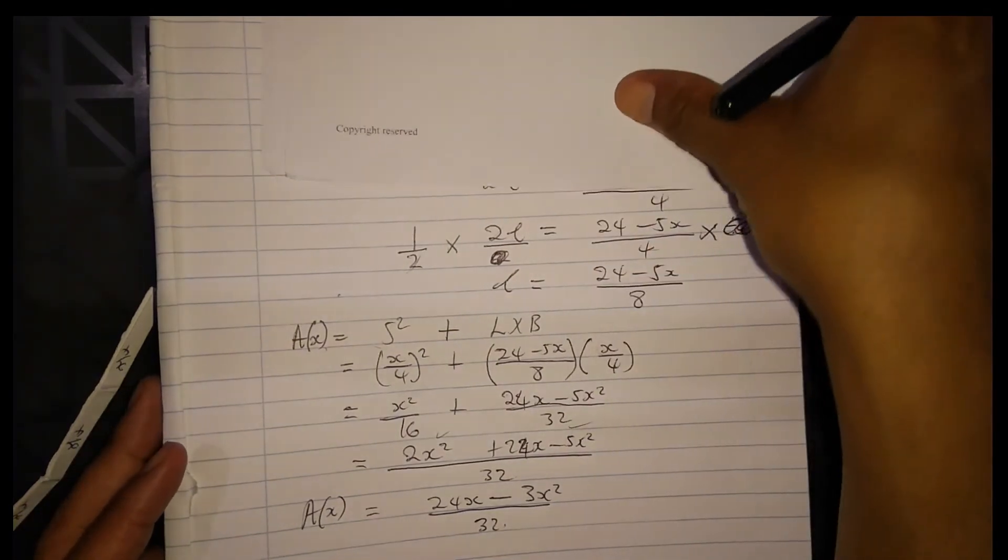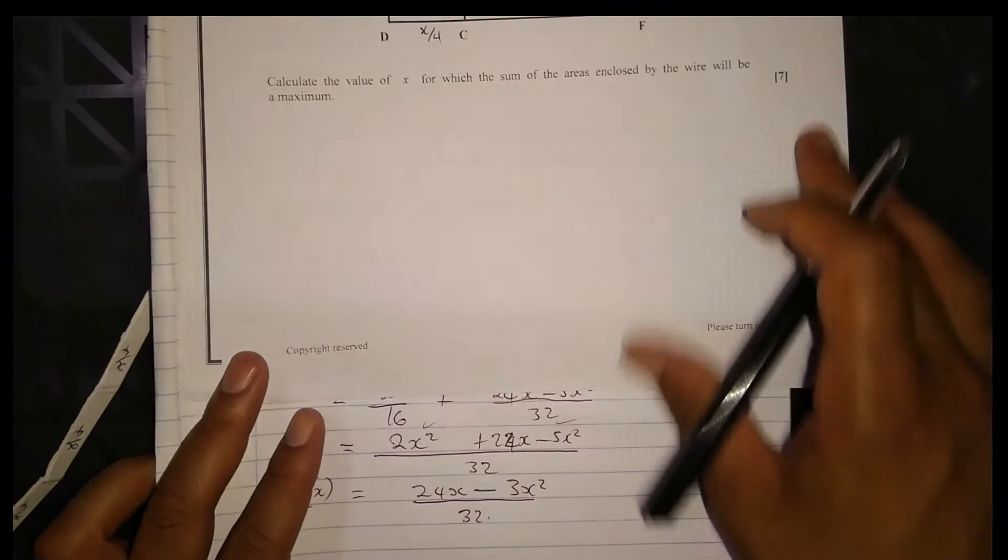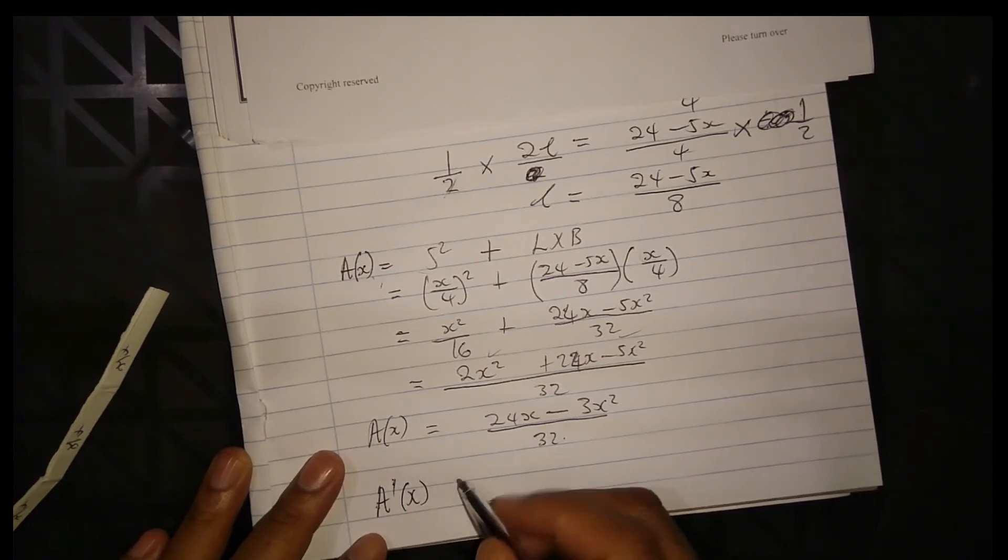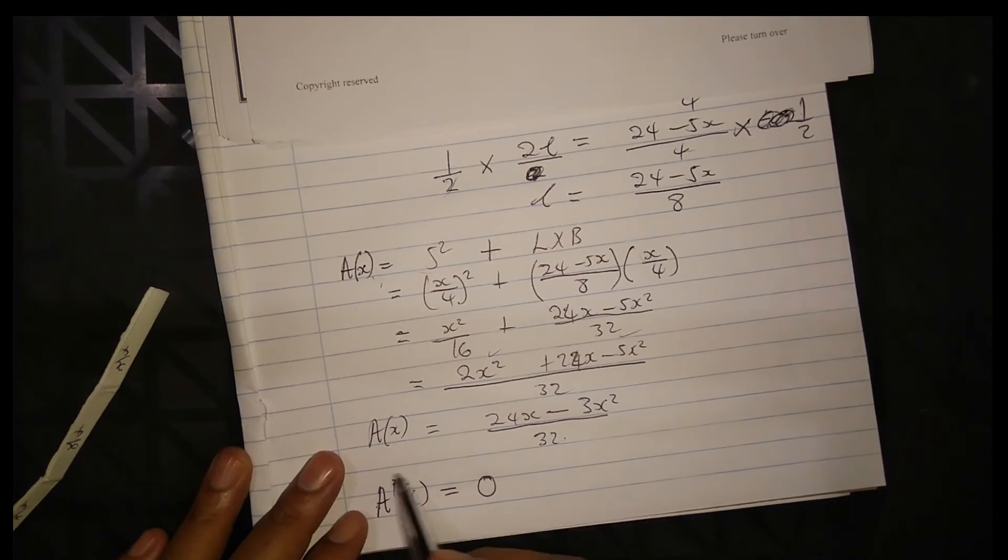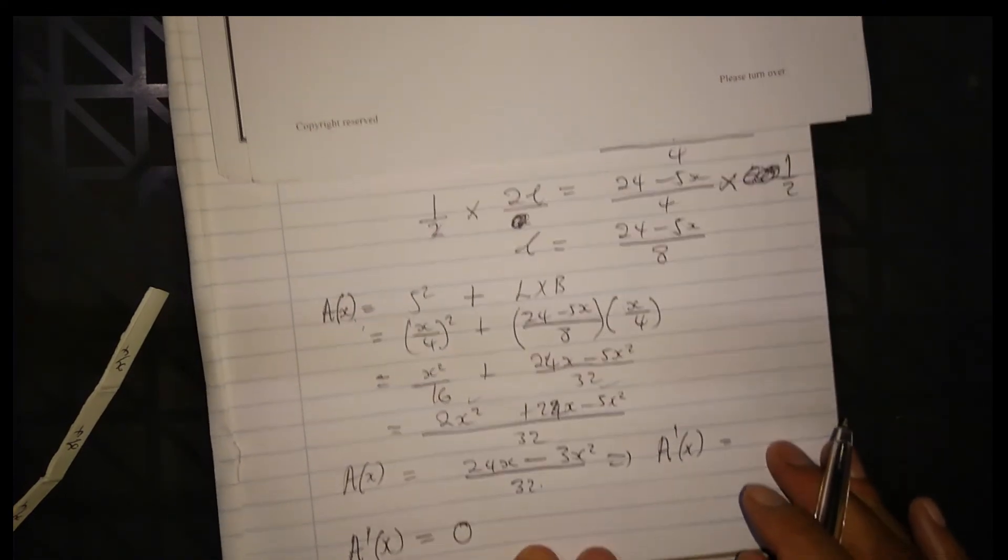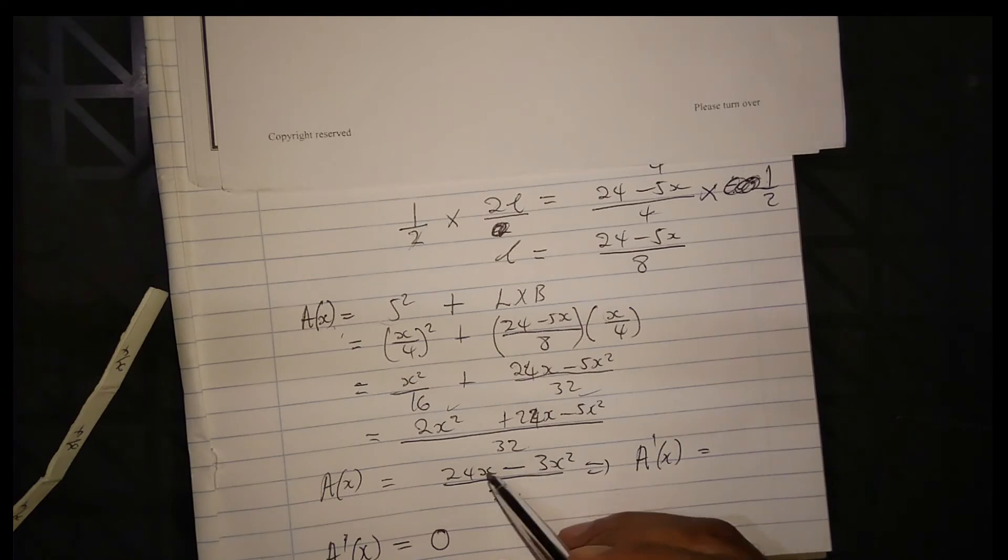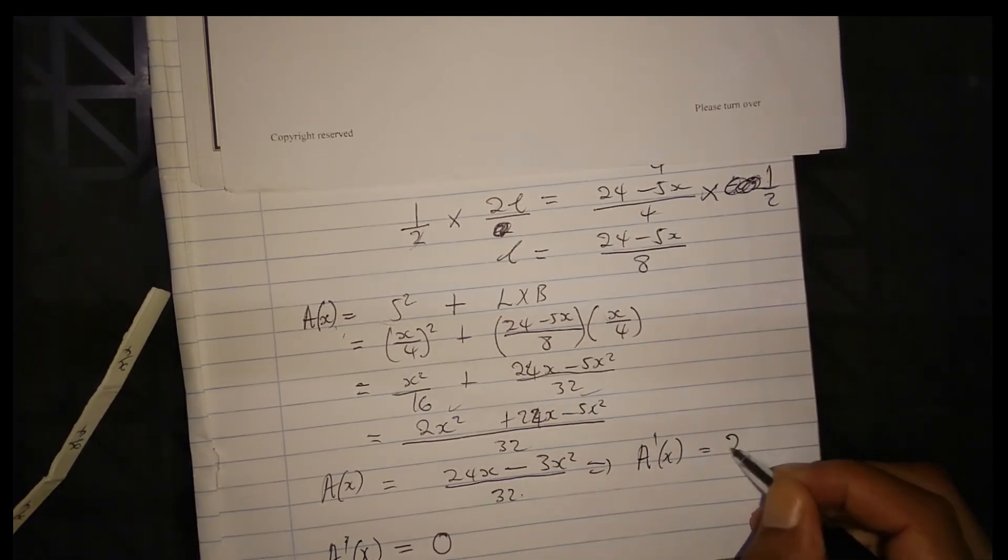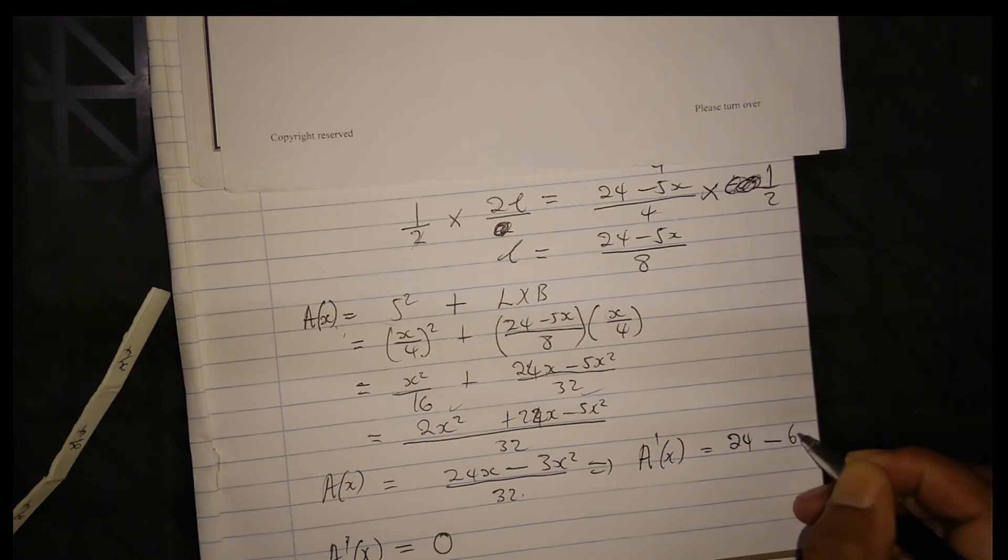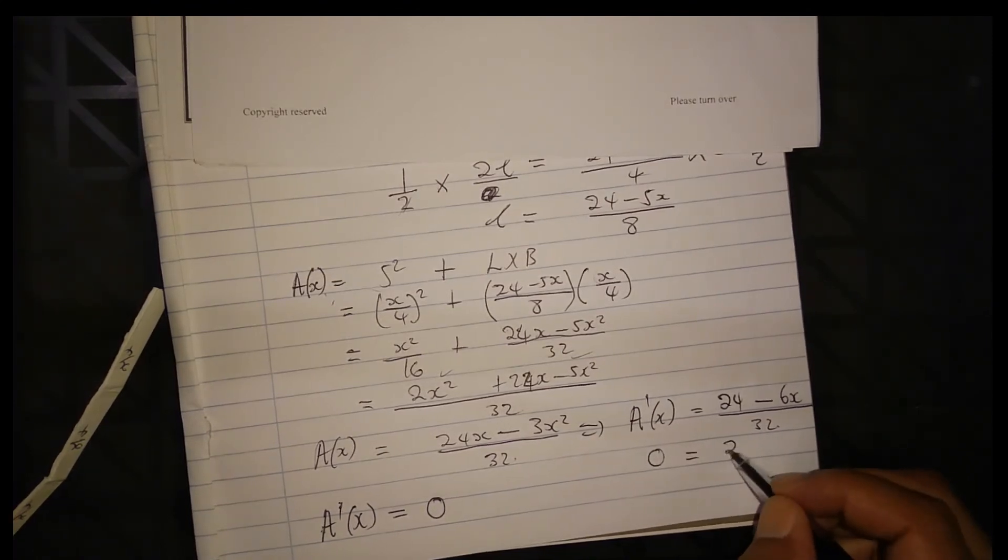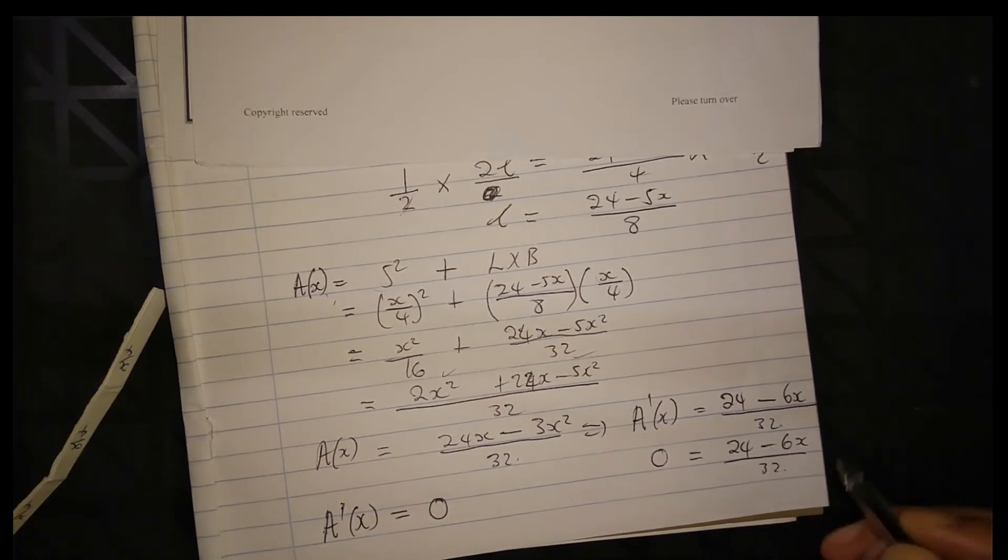Now, to find the maximum value, we take the derivative. A prime of x equals 0. The derivative - I'm going to differentiate the numerator. So A prime x equals 24 minus 6x all divided by 32, equal to 0.